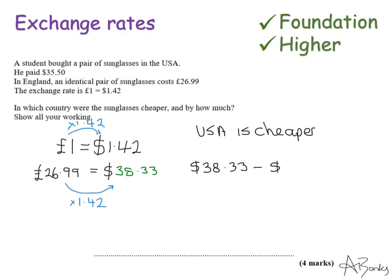But it also asks me by how much, so I'm going to have to do my $38.33 take away $35.50 and that gives me $2.83. So I'm just going to write it on my answer line to make sure I've definitely answered it, USA by $2.83.